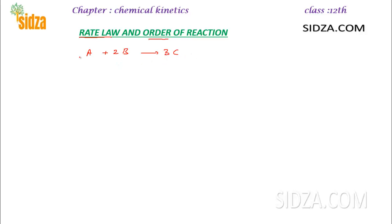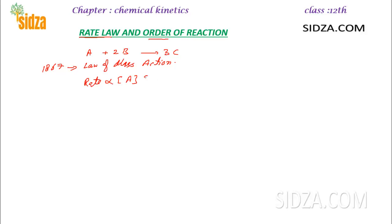Regarding the rates of the reaction, in 1867, Gullberg, a very famous scientist, put forward a result which is called the law of mass action. According to this law, the rate of a reaction is directly proportional to the concentration of the reactants. If you increase the concentration of the reactants, the rate of reaction increases, and each term is raised to the power equal to their coefficients in the balanced chemical equation.